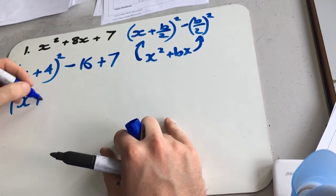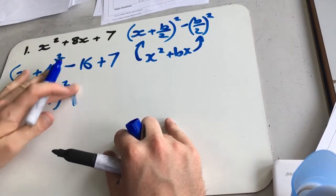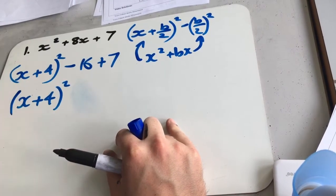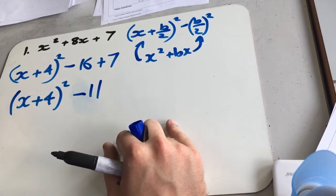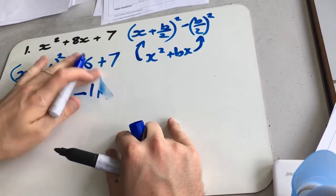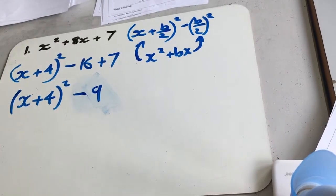And the last step, x plus 4 squared minus... It's going to be minus 11. No, it's not. I'm talking rubbish. Minus 9. Cool.